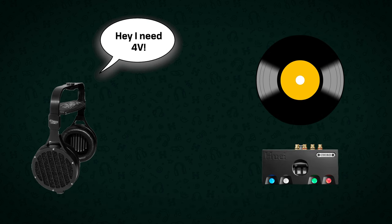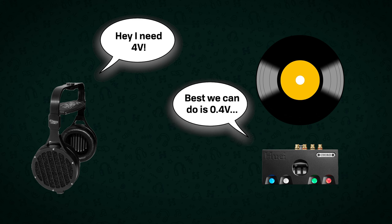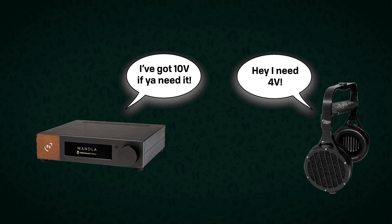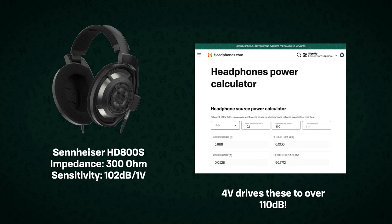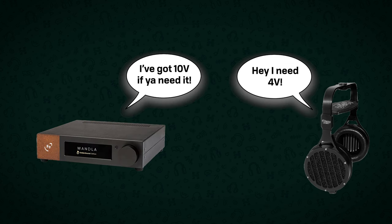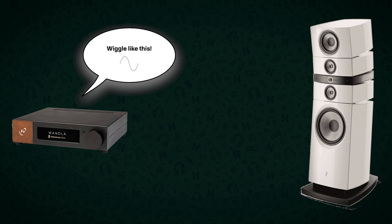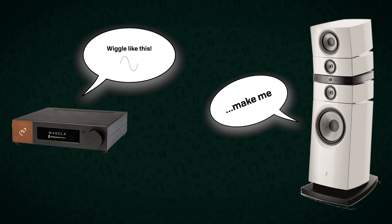Whilst gain is particularly important for sources like vinyl phono stages that often have very low voltage output, many DACs will output 4 volts or more. And if you plug that into a headphone sensitivity calculator, you'll see that this could drive most headphones to extremely loud volumes. So if gain isn't actually needed with most modern DACs, do you still need an amp? Yes — because whilst you can think of the voltage as the instructions to the driver on how to move, something still needs to supply the energy to actually move it as instructed by that signal.